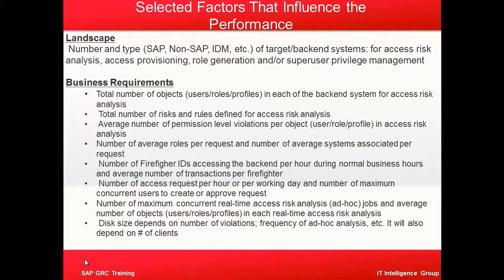Let's look at the factors that influence performance. First is the number and type of target backend systems — how many systems we want to connect. This covers risk analysis, access provisioning, role generation, and super user privilege management. Business requirements also matter: total number of objects in each backend system, total number of risks and rules defined for access risk analysis, and average number of permission-level violations per object.